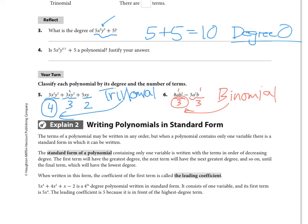Here are some examples. Anything to the zero power is one, so it simplifies to a constant with no variable — degree zero. For the next example, classify by degree and number of terms: with three terms it's a trinomial. Two plus two is four, one plus two is three, one plus one is two — the highest is four, so it's a fourth-degree trinomial. The next has degrees three and three, so it's a third-degree binomial.